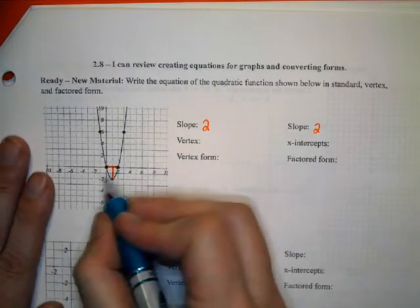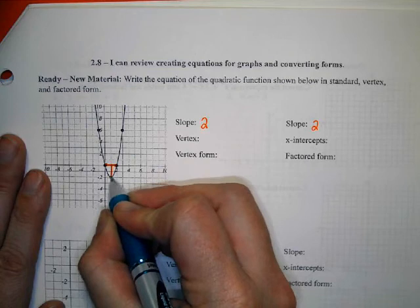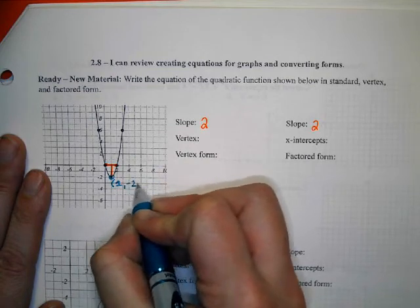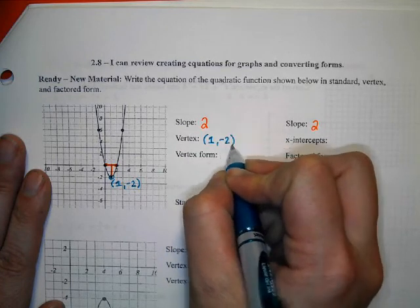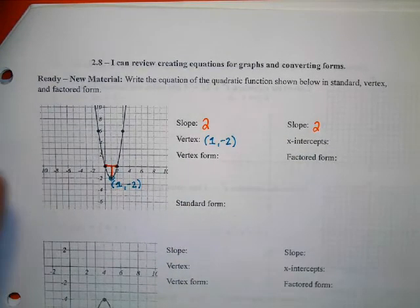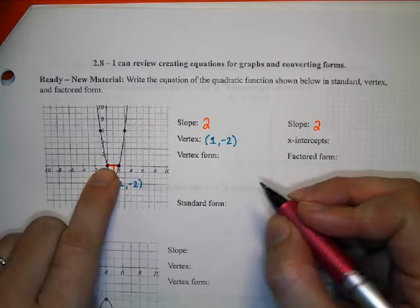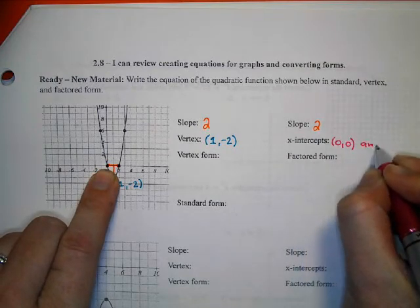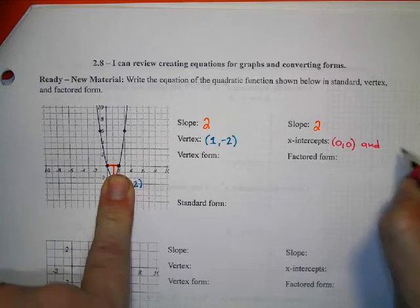My vertex is right here at 1, -2. Does anybody know where the x-intercepts are? There's one right here at 0, 0. And anybody know what that one would be? 2, 0.